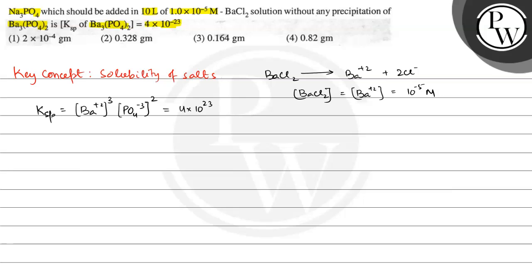We need to find the maximum amount of PO₄³⁻ that can be added to the solution before precipitation begins. We rearrange the Ksp expression: [PO₄³⁻]² = 4×10⁻²³ divided by [Ba²⁺]³.